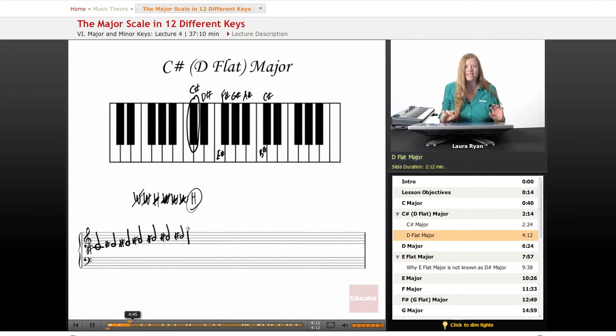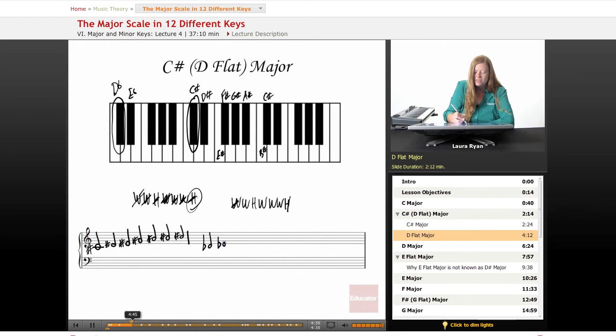That's a lot to write and think about. Let's take the same scale and think about it in D flat. Here's our note, D flat. Let's draw out our pattern: whole, whole, half, whole, whole, whole, half. D flat to E flat, that is a whole step. E flat to F, that's our next whole step. F doesn't need anything, it's just regular F. Now we need a half step, F to G flat. G flat to A flat whole, A flat to B flat whole, B flat to C whole, and C to D flat is our last half step.